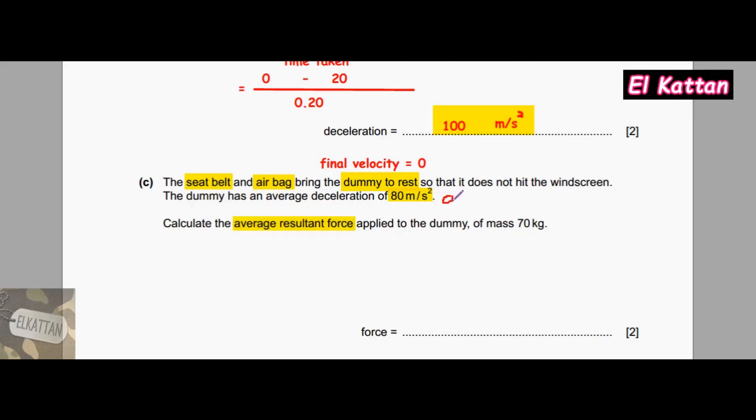The symbol of deceleration is a, and the symbol of force is F. According to Newton's second law of motion, F equals ma. The mass is 70 kg and deceleration is 80, so force is 5600 newtons.